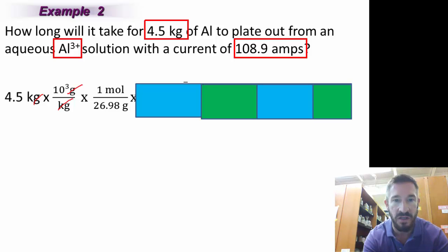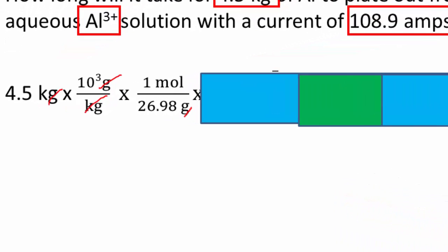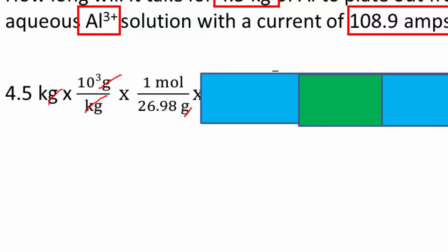Now I want to take moles of aluminum and change it to moles of, guess what? Moles of electrons. One mole of aluminum has three moles of electrons. So there it is. I like how that disappears.